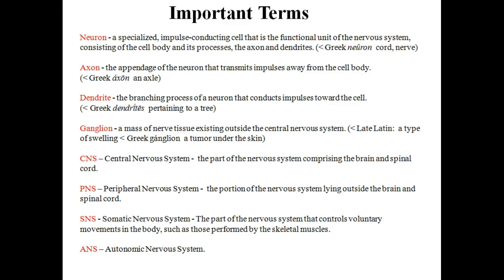CNS stands for central nervous system, which is the part of the nervous system comprising the brain and spinal cord. PNS stands for peripheral nervous system, which is the portion of the nervous system lying outside the brain and spinal cord. SNS stands for somatic nervous system, which is the part of the nervous system that controls voluntary movements in the body, such as those performed by the skeletal muscles. ANS stands for autonomic nervous system.